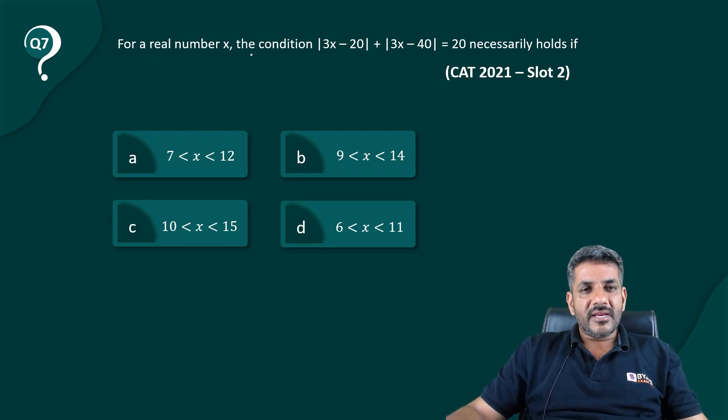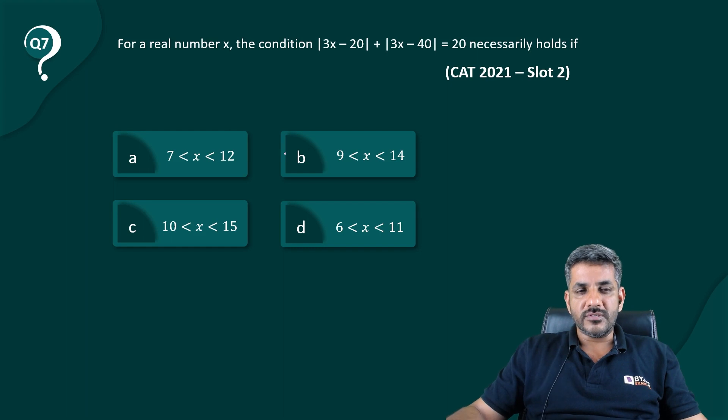For a real number x, the condition |3x - 20| + |3x - 40| = 20 necessarily holds if one of these ranges is there.